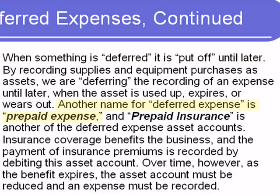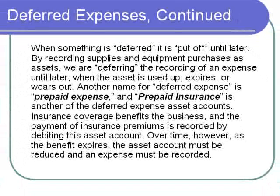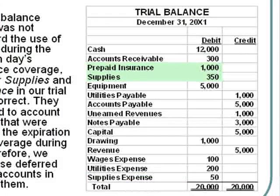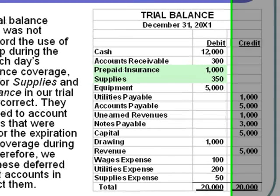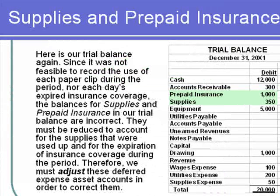Another name for deferred expense is prepaid expense. Prepaid insurance is another deferred expense asset account — insurance coverage benefits the business, and the payment of insurance premiums is recorded by debiting this asset account. Over time, as the benefit expires, the asset account must be reduced and an expense must be recorded. Our trial balance shows two highlighted accounts: prepaid insurance and supplies. Since it was not feasible to record each day's expired insurance coverage or each use of supplies, these balances are incorrect and must be adjusted.